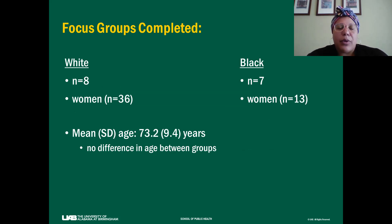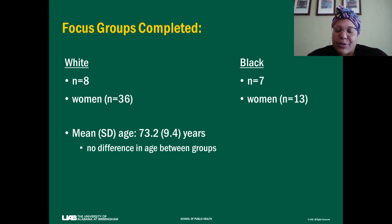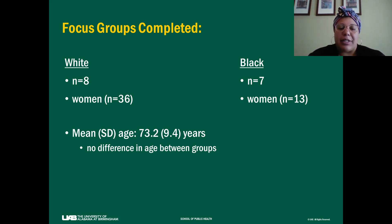We completed eight focus groups of White women for a total of 36 women recruited, and seven focus groups of Black women that included 13 women. I can give a whole other talk on recruitment issues and lessons learned — let me know if you're interested. Although our numbers were disparate, the mean age of the population was 73 and there were no differences in age between the two groups.